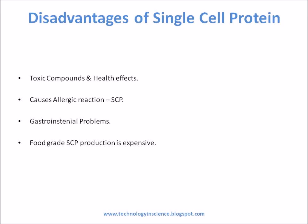Disadvantages of single-cell protein: even though single-cell proteins have the above-mentioned advantages, they have some disadvantages. Many microbes produce toxic compounds, so consumption of such toxins can have serious effects on the health of humans or animals. Single-cell protein diet supplements can pose allergic reactions. Consuming SCP means intaking higher amounts of nucleic acids, which can lead to gastrointestinal problems. Food-grade SCP production is expensive due to the need to maintain high-level sterility conditions in the production facility.